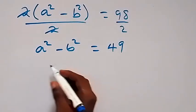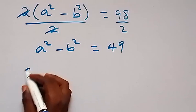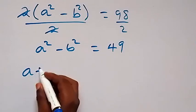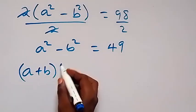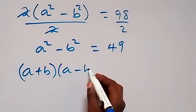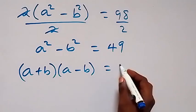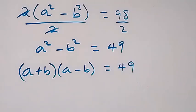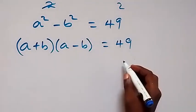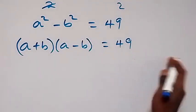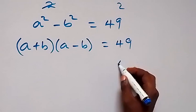Next, we apply the difference of two squares, writing this as (a + b) multiplied by (a minus b), which equals 49.